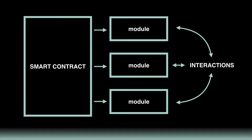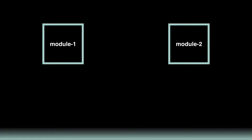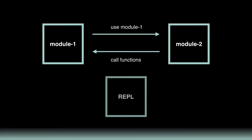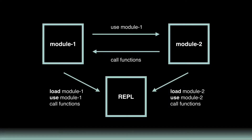Here's an example showing what a project could look like when using multiple modules. You can see that there are two files: Module1 and Module2. Module2 is using Module1 to call functions that exist within the module. The REPL file then loads and uses both of these modules to call functions and facilitate their interaction. This is the basic structure of how to set up your files.